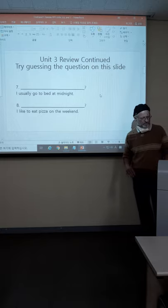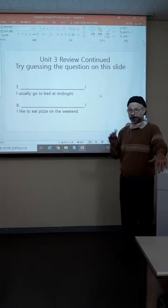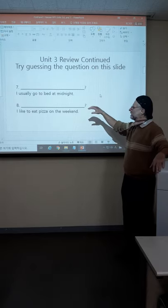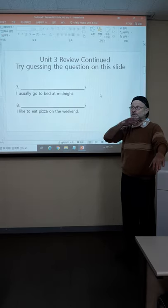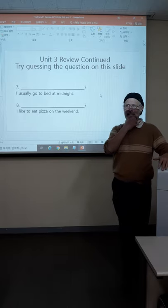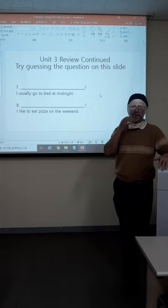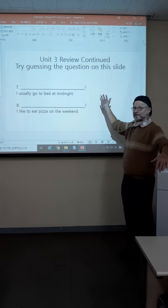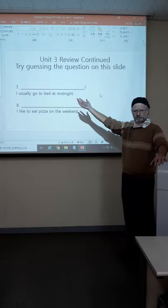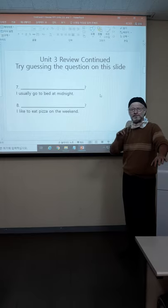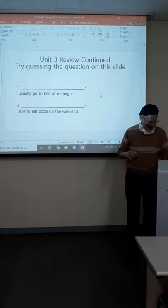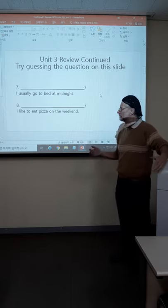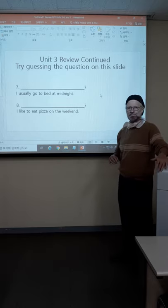This is the last slide for Unit Three. Try to guess the question on this slide — it's similar to the examples about Mount Everest and President Moon. Remember how the game Jeopardy is played: I give you the answer, and you form the question. Number seven: The answer is 'I usually go to bed at midnight' — what would the question be? Write it down or say it. Number eight: The answer is 'I like to eat pizza on the weekend' — what's the question?